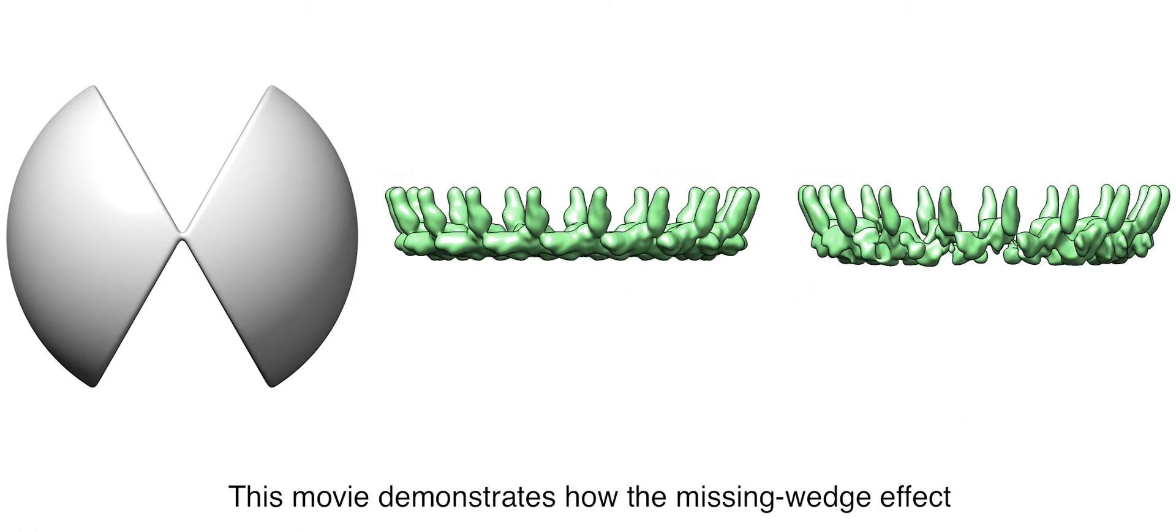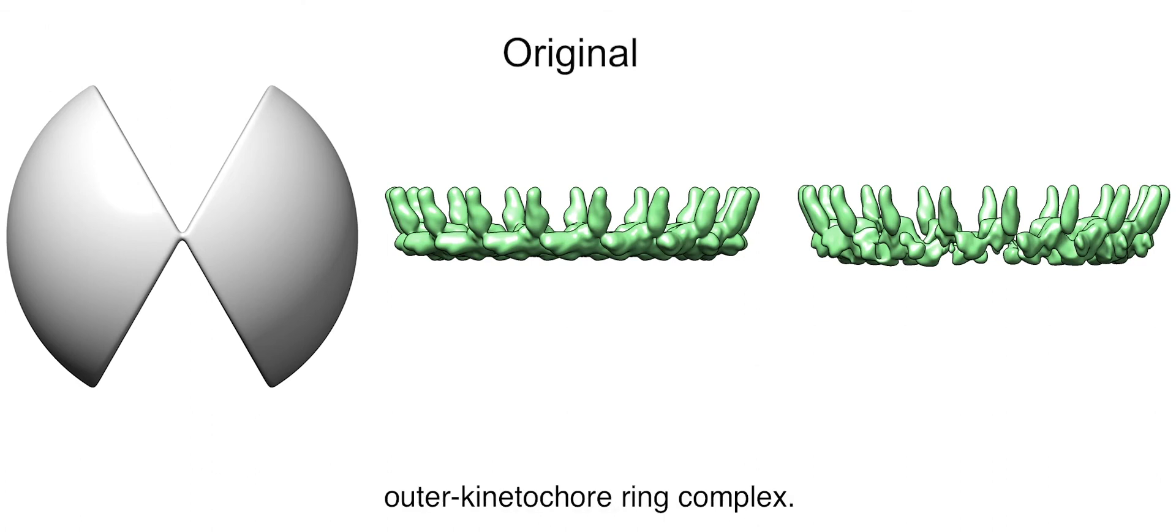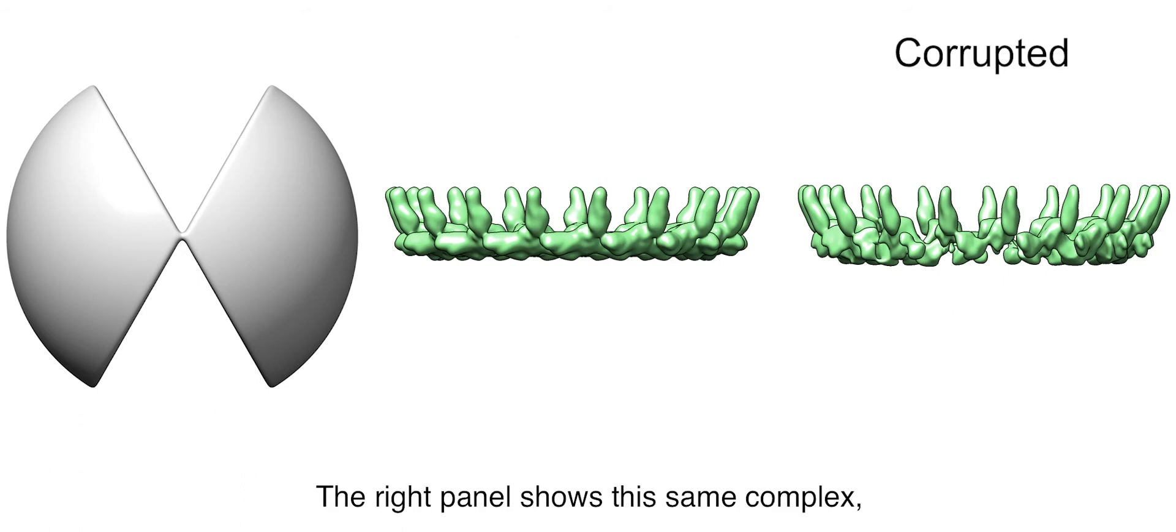This movie demonstrates how the missing wedge effect influences the appearance of structures in electron tomograms. The left panel shows the Fourier transform with the missing wedge. The middle panel shows a DEM1-outer kinetochore ring complex. The right panel shows this same complex after corruption by the missing wedge.